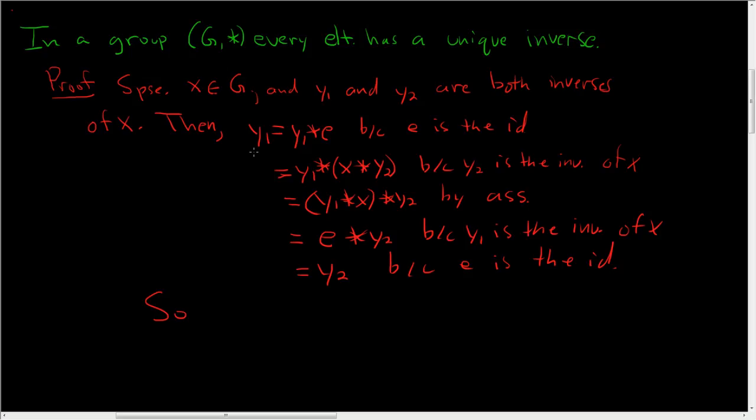So we showed that y1 is equal to y2. So y1 is equal to y2. And that finishes the proof, and we've shown that the identity element is unique.